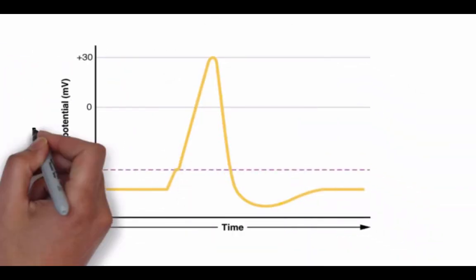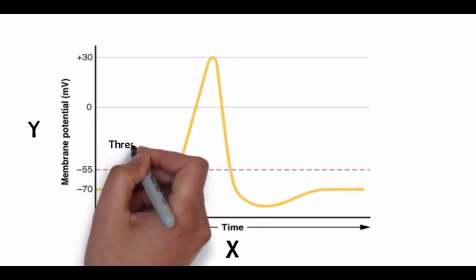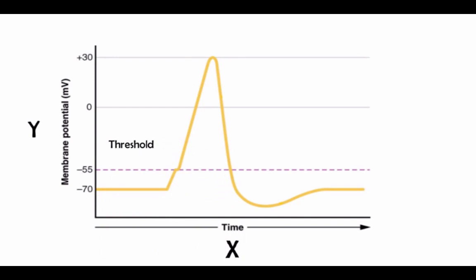This chart shows membrane potential on the y-axis and time on the x-axis. When neurotransmitters interacting with receptors causes repeated depolarization of the neuron, eventually the neuron reaches what is known as its threshold membrane potential. In a neuron with a membrane potential of negative 70 millivolts, this is generally around negative 55 millivolts.